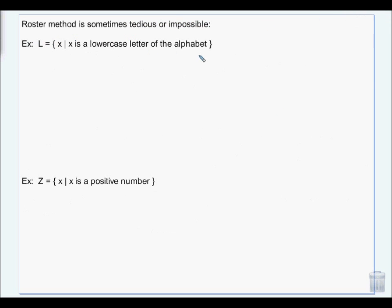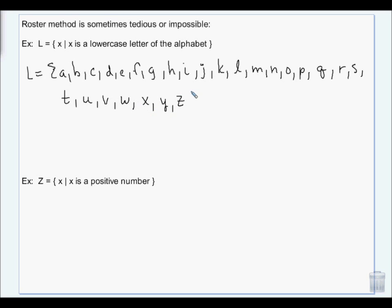Roster method is sometimes tedious or impossible. You can do a shortcut method. If you have a set that's a very well-known set, for example, the letters of the alphabet or let's say you wanted to list the numbers one through 25, you list enough letters or numbers to show the pattern. Then you dot, dot, dot, and then you put the last one. So if I wanted to do the set of numbers one through 25, I'd do one, two, three, dot, dot, dot, 25.